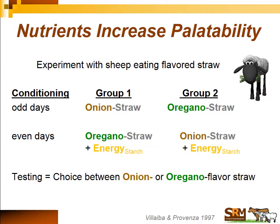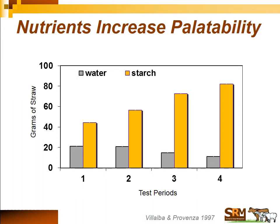The experiment had two groups of sheep. Group one received onion-flavored straw on odd days with no particular feedback, and oregano-flavored straw on even days with starch delivered directly to the rumen — an energy source. Group two received the reverse: oregano-flavored straw on odd days and onion-flavored straw with the energy source on even days. Then they were given a choice between onion or oregano-flavored straw. Results were clear from the first test period: animals preferred the flavor of straw associated with the starch energy feedback, and the more experience they had, the stronger the preference became.